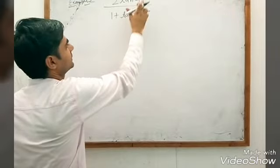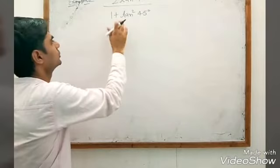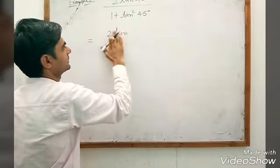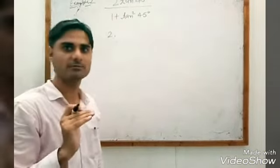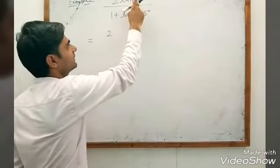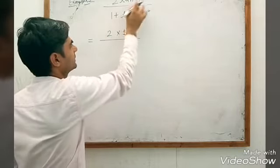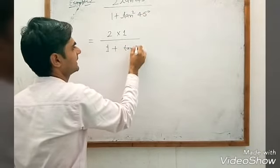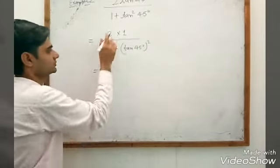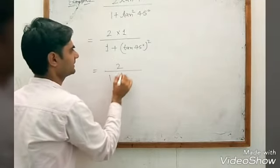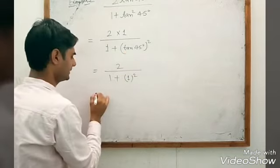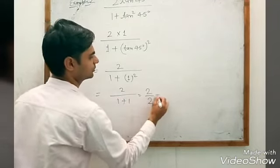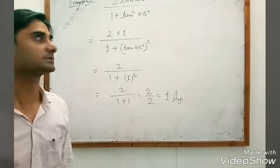Here is one more example: 2 tan 45° / (1 + tan² 45°). From our table, tan 45° = 1. So this equals 2 × 1 / (1 + 1²) = 2 / (1 + 1) = 2/2 = 1. So the answer of this question is 1.